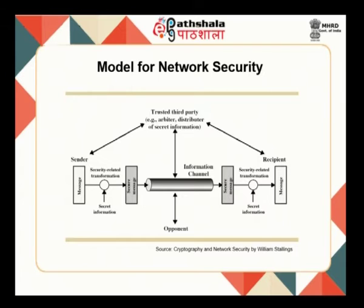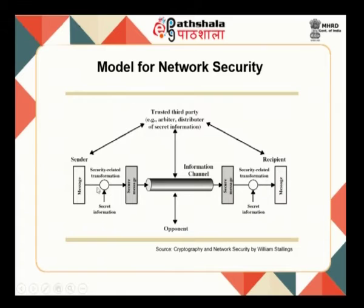The last session covered CIA — confidentiality, integrity and availability — and also two other things: authenticity and non-repudiation. In a secure environment, this is a model of network security where we have a sender and recipient. The sender wants to send a message to the recipient over a channel. Without security, it is going to be sent over a normal unsecured channel. With an unsecured channel, every piece of data can be captured and it is going to be under threats.